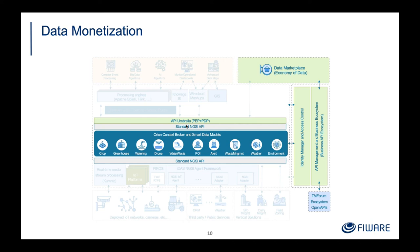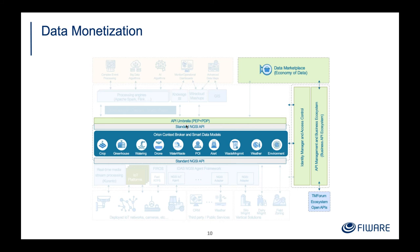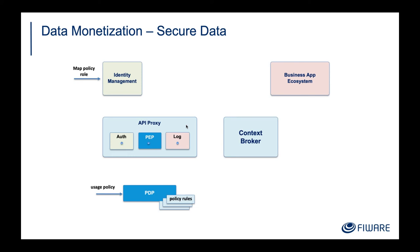So we have these components for data monetization. The first step in the data monetization scenario we are following today is securing the access to the context broker. We need to create access policies establishing what HTTP method, what tenant, what entities, and under what circumstances users are going to be able to access the context broker. Then we need to create a role in the identity manager that maps to that access policy — we are using a role-based access control mechanism here.